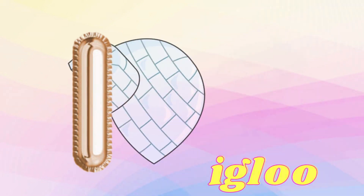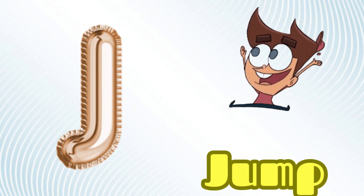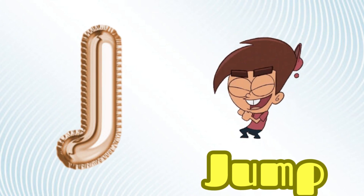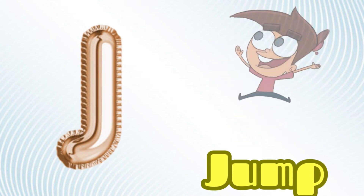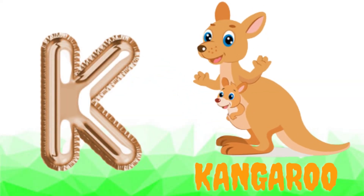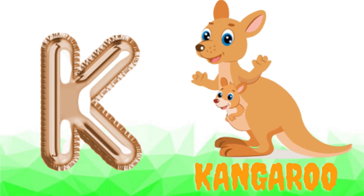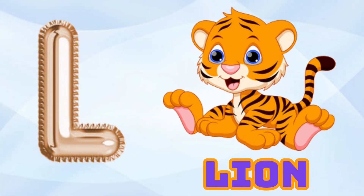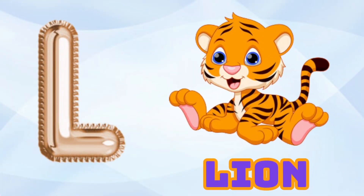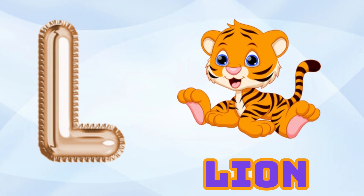I, i, igloo. J is for jump, j, j, jump. K is for kangaroo, k, k, kangaroo. L is for lion, l, l, lion.